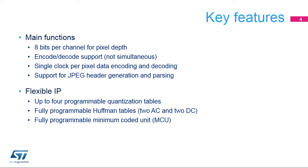The JPEG Codec works with a standard pixel depth of 8 bits per channel. Encode and decode processes are fully implemented in hardware, but cannot operate simultaneously. Encoding and decoding processes are very efficient,